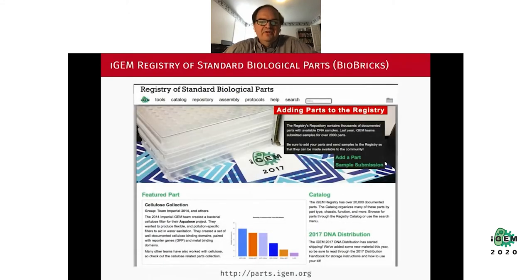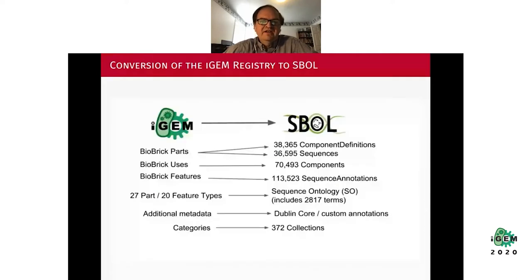Another data repository hopefully you're all familiar with is the iGEM Registry of Standard Biological Parts, the core registry where people within the iGEM competition share their information. The iGEM registry itself doesn't support the SBOL data standard, but in our group we've taken the entire iGEM registry data and converted it into the SBOL data standard so that it's more readily usable by genetic design automation tools.